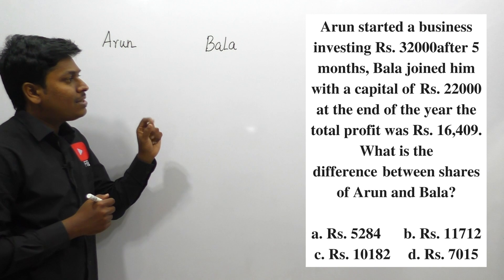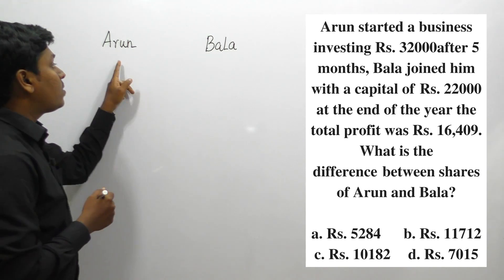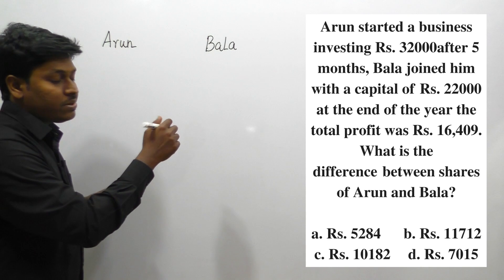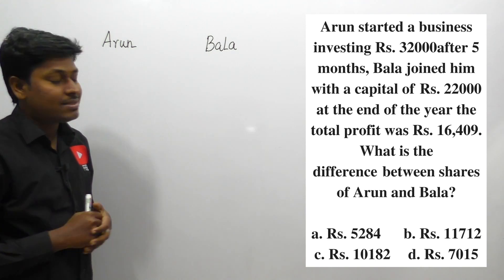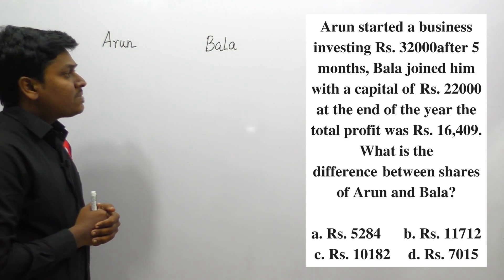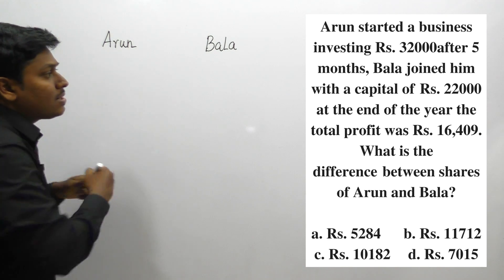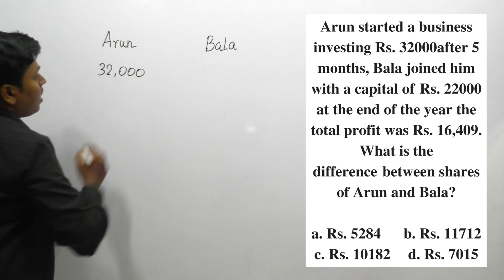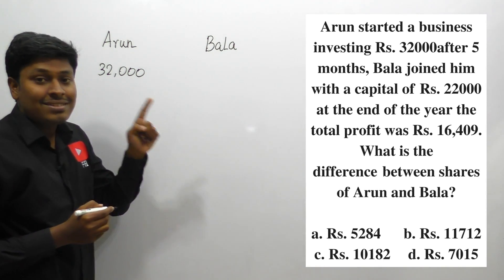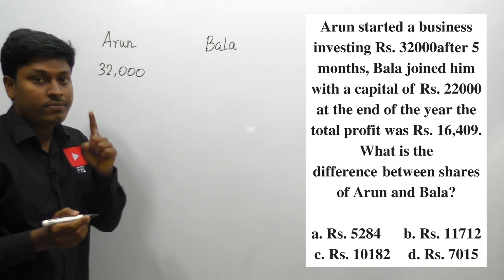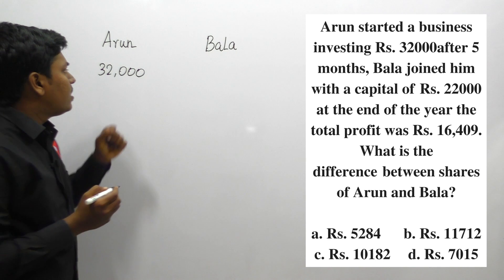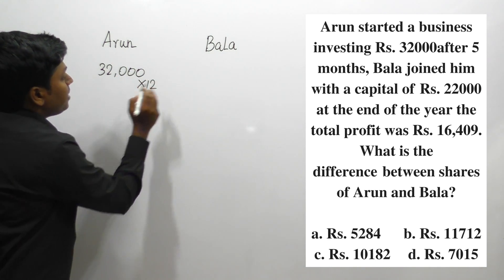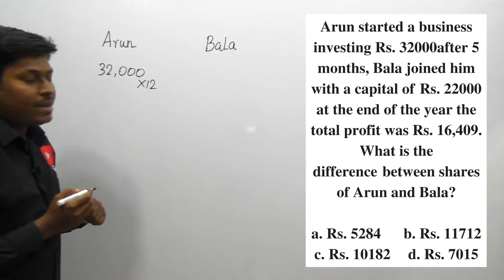After reading question one, there are two persons in the business: Arun and Bala. Our target is to find the difference in their shares. Arun is starting the business investing 32,000 rupees, and since the profit is calculated for one year, Arun will be in the business for the complete 12 months.